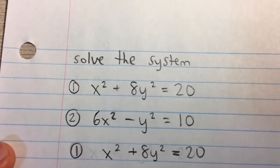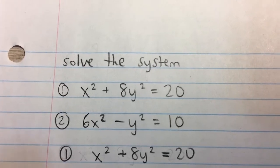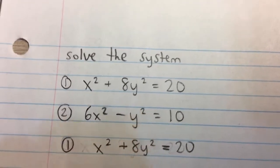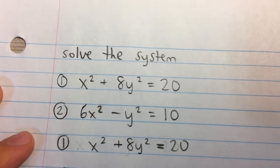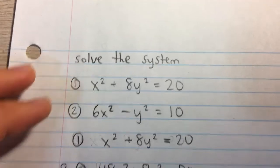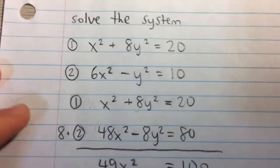In this case, substitution would be kind of messy because we would have to solve for, say, y, then we would have to deal with square roots and stuff like that. Instead, if we just eliminate variables by adding the equations, it would be much easier.